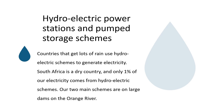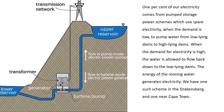Hydroelectric power stations and pumped storage schemes. Countries that get lots of rain use hydroelectric schemes to generate electricity. South Africa is a dry country and only 1% of our electricity comes from hydroelectric schemes. Our two main schemes are on large dams on the Orange River. 1% of our electricity also comes from pumped storage power schemes, which use spare electricity when demand is low to pump water from low-lying dams to high-lying dams. When demand for electricity is high, the water is allowed to flow back down, and the energy of the moving water generates electricity. We have one such scheme in the Drakensberg and one near Cape Town.